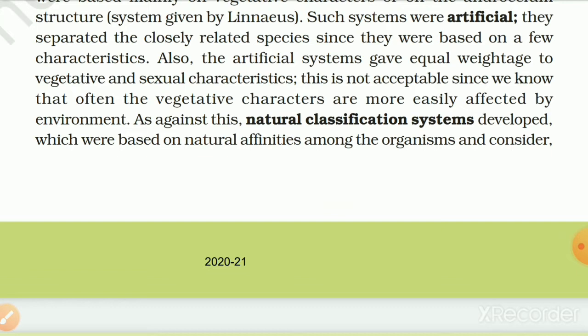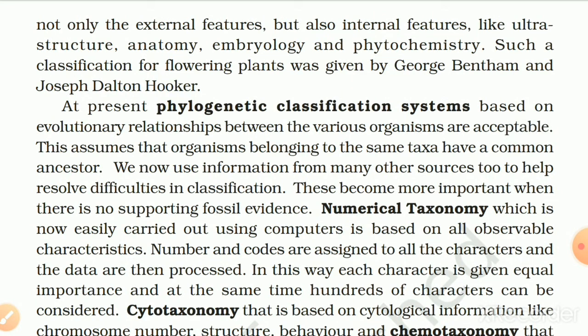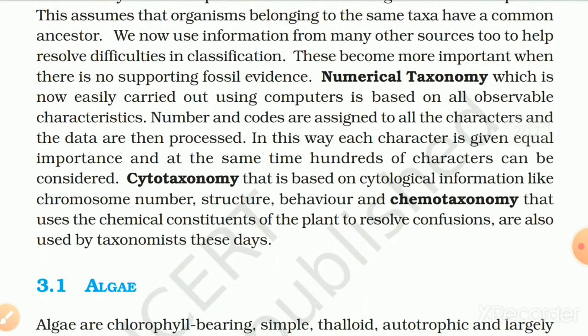As against this, natural classification systems developed which were based on natural affinities among the organisms and consider not only external features but also internal features like ultrastructure, anatomy, embryology and phytochemistry. Such a classification for flowering plants was given by George Bentham and Joseph Dalton Hooker. At present, phylogenetic classification systems based on evolutionary relationships between various organisms are acceptable, assuming that organisms belonging to the same taxa have a common ancestor.